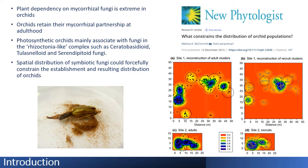We all know about the importance of mycorrhizal fungi — almost 80–90% of plants show this symbiotic interaction. But this dependency on mycorrhizal fungi is extreme in orchids, because seeds are so small they lack nutrients, so they need to gain nutrients from the mycorrhizal fungi.